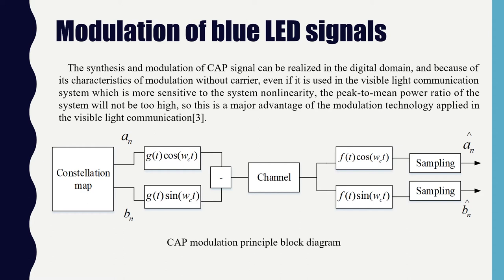Since the visible light communication system is very sensitive to system non-linearity, CAP modulation will not cause the system's peak-to-average power ratio to be too high. This is a major advantage of CAP modulation in optical communication systems. The CAP modulation principle block diagram is shown in this figure.